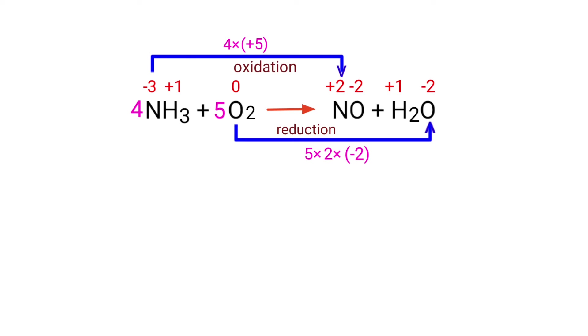Now you can write the equation as 4 NH3 plus 5 O2 gives us NO plus H2O. Now you can balance the number of atoms in this equation.